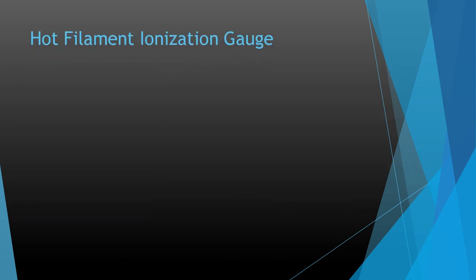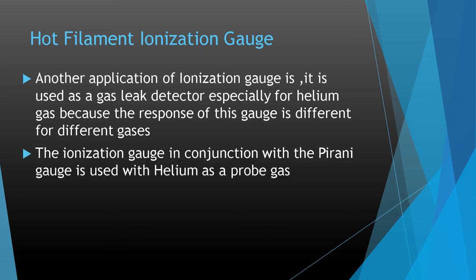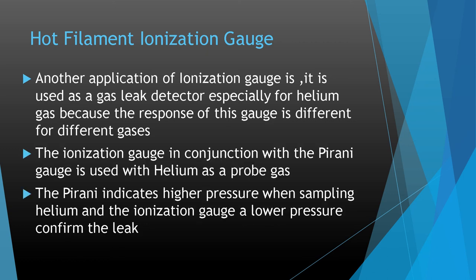Another application of the hot filament ionization gauge is its use as a gas leak detector, especially for helium gas, because the response of this gauge differs for different gases. The ionization gauge in conjunction with the Pirani gauge is used with helium as a probe gas — the Pirani gauge indicates higher pressure when sampling helium, while the ionization gauge showing a lower pressure confirms the leak.